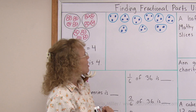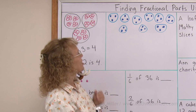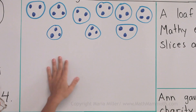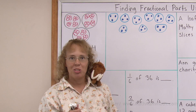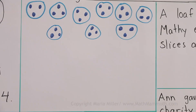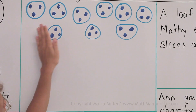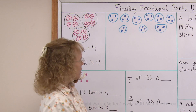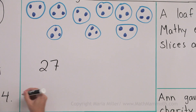Now let's look at it. Look at those, Mati — a bunch of blueberries! How many are there? Actually, I could use multiplication to find how many there are, because I have three in each group and there are nine groups, so there are 27 blueberries.